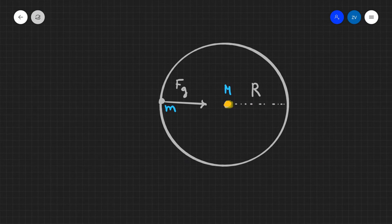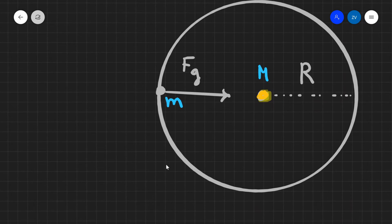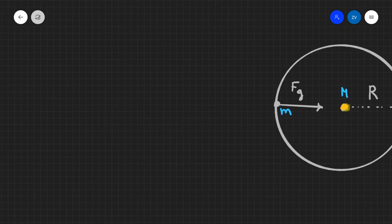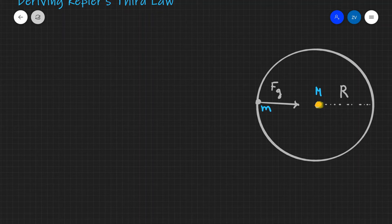Now what forces are acting on this planet? We know that this planet is essentially moving in a circle and what's causing it to move in a circle is the gravitational force. Now this gravitational force is actually also the source for the centripetal force. Remember, any object which moves in a circle is going to experience a centripetal force. So let's set both of those forces equal together.